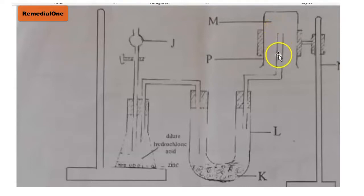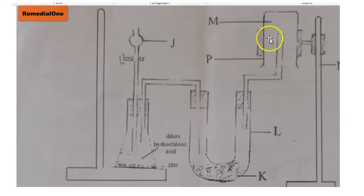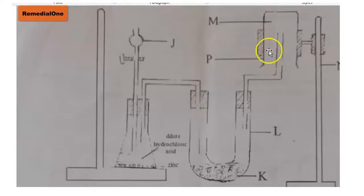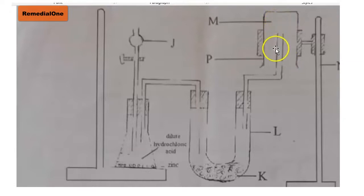This method of collection is for gases which are lighter than air, such as hydrogen gas and ammonia. The average relative molecular mass of air is assumed to be 28.8. You compare the relative molecular mass of the gas concerned to 28.8, and if it is lower, then that gas is lighter than air. Hydrogen gas has a relative molecular mass of 2, so it is collected by upward delivery or downward displacement of air.